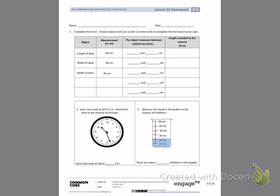Number one, complete the chart. Choose objects and use a ruler or meter stick to complete the last two on your own. So we have the length of a desk. It tells us the length of that desk is 66 centimeters.